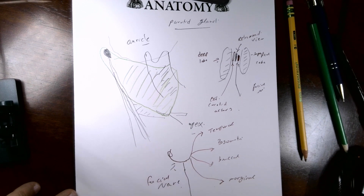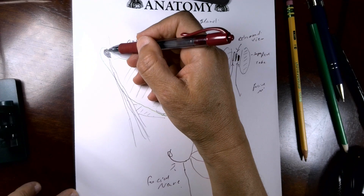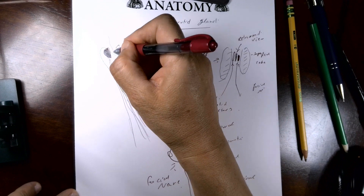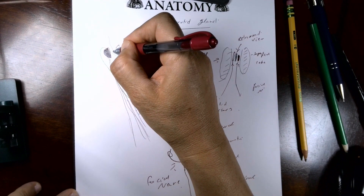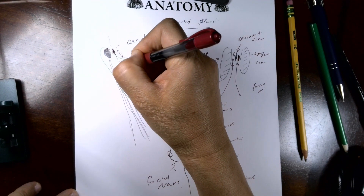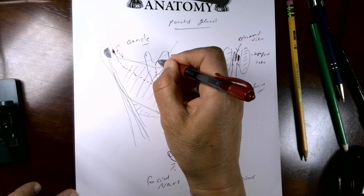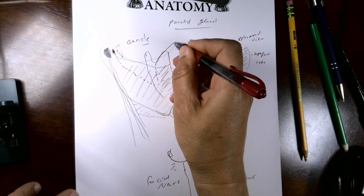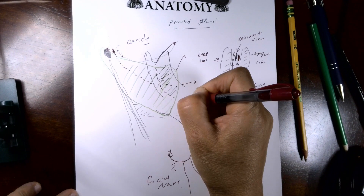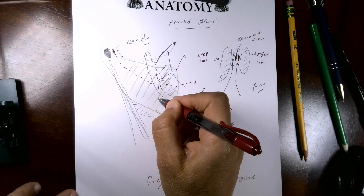The mastoid process is here, the styloid process is deep, and in between is the stylomastoid foramen. The facial nerve inside the gland divides into five terminal divisions: temporal, zygomatic, buccal, marginal, and cervical.